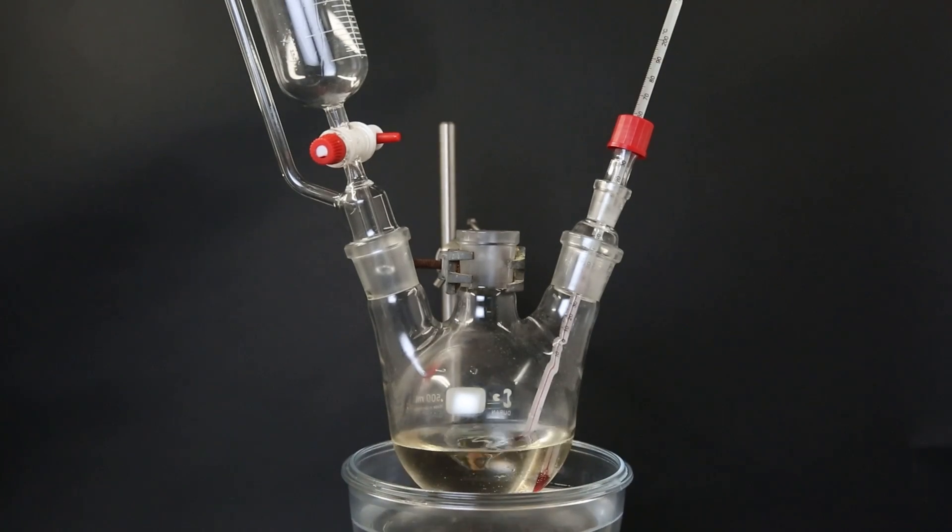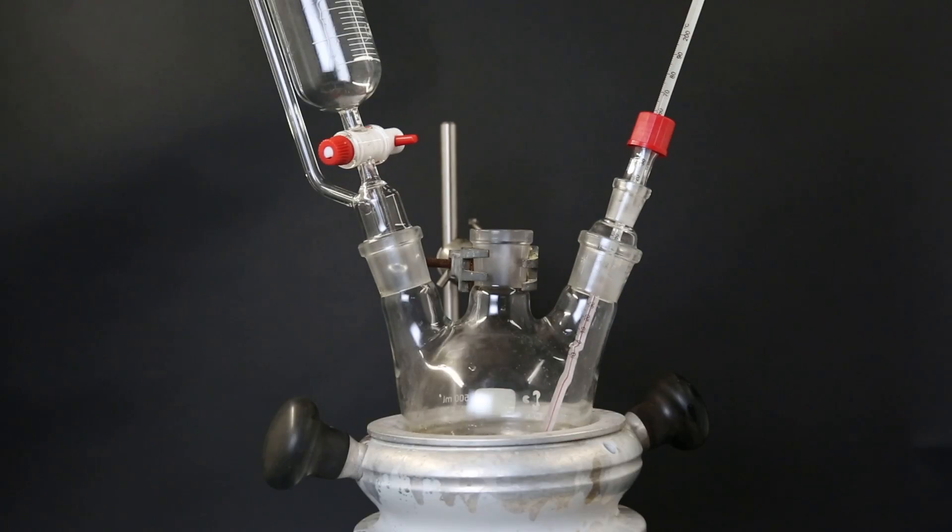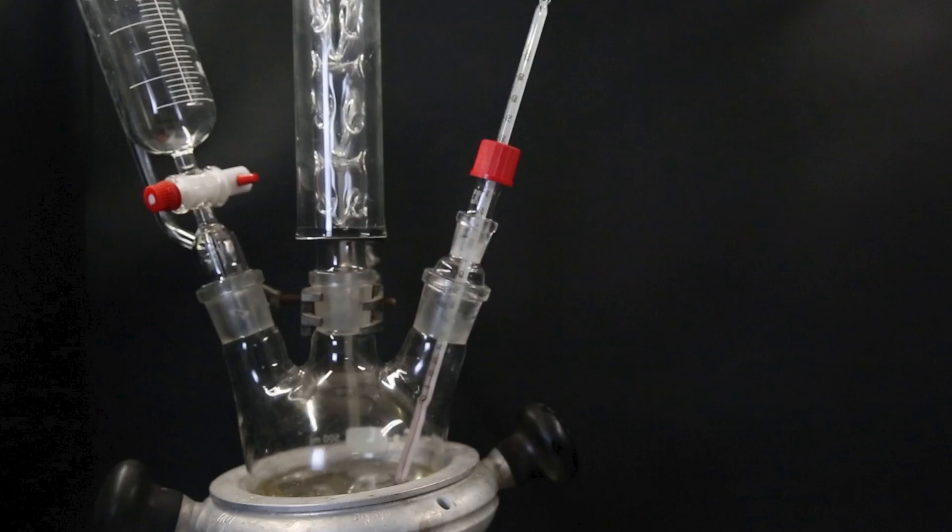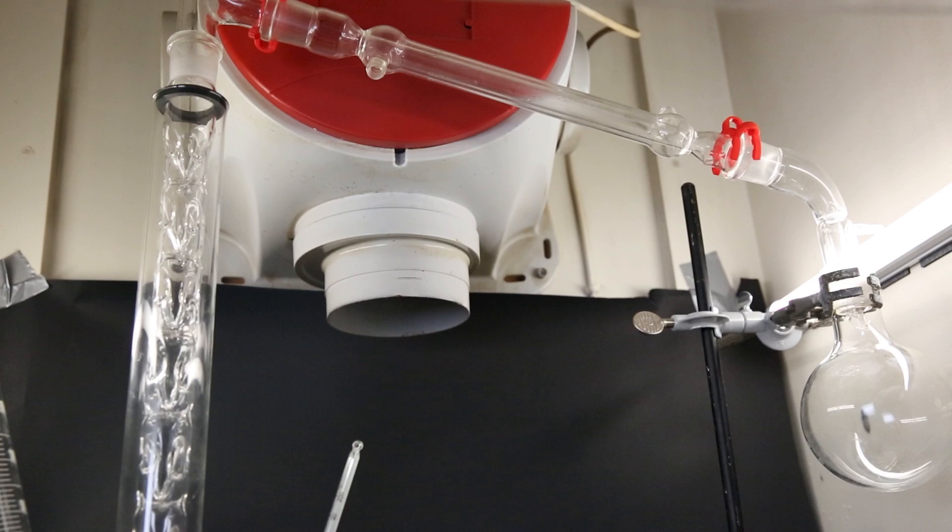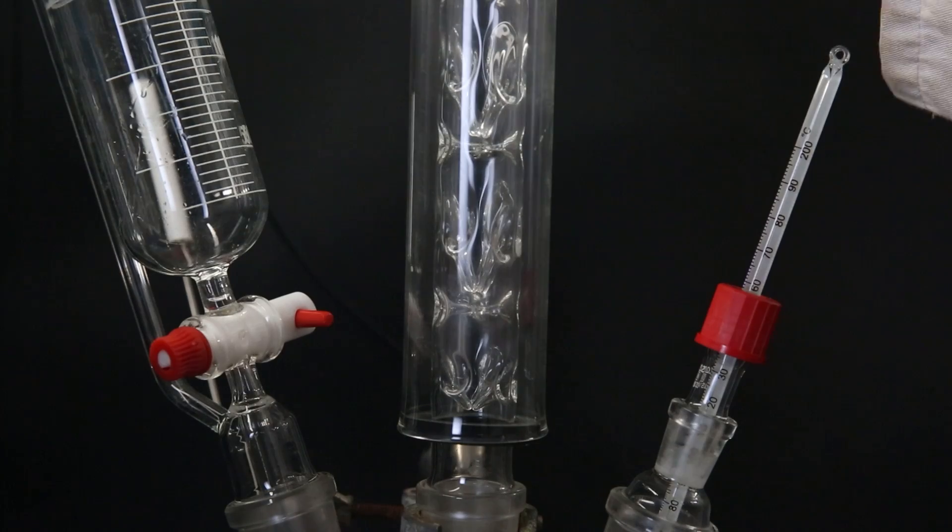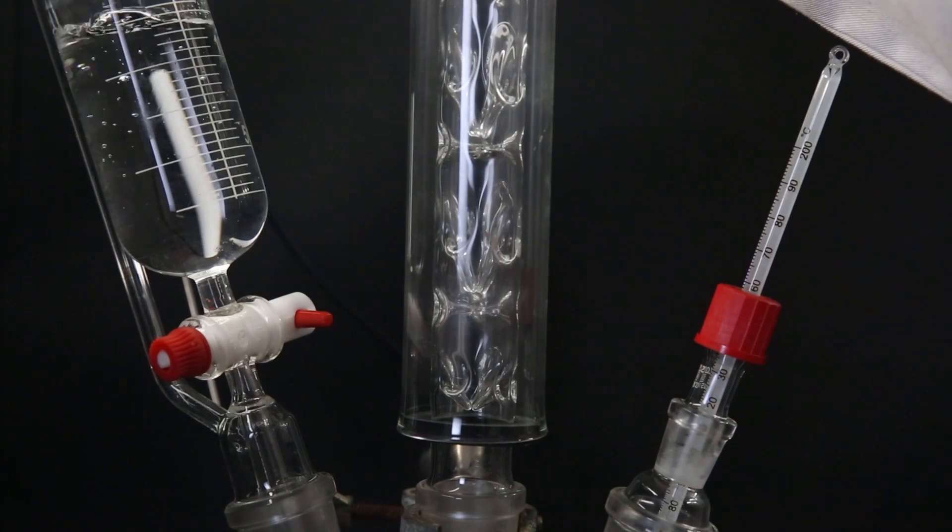When the addition is finished, I remove the ice bath and add a heating block. Now I set it up for a fractional distillation. And this is what the setup looks like. I turn on the heating and add 250 ml of ethanol to the addition funnel.